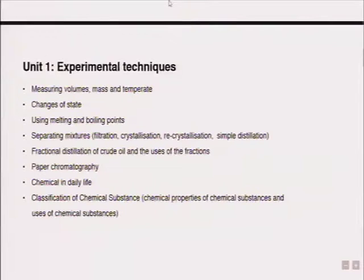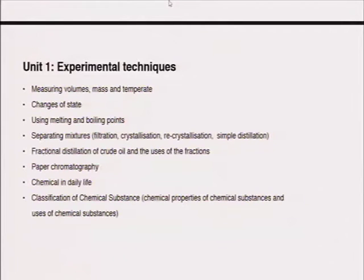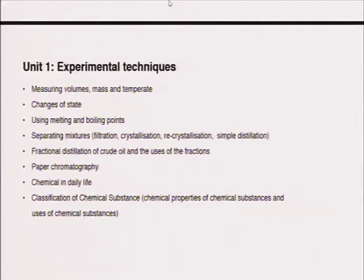Unit 1 looks at experimental techniques. To answer questions based on that unit, you need to understand how volume, mass and temperature are measured — this is really basic chemistry. You need to understand the changes of state: solids, liquids and gases, and how solids change to liquid or liquid to gas. You also need to understand melting and boiling points, because different elements have different boiling points, and how that can influence the reactions of different elements.